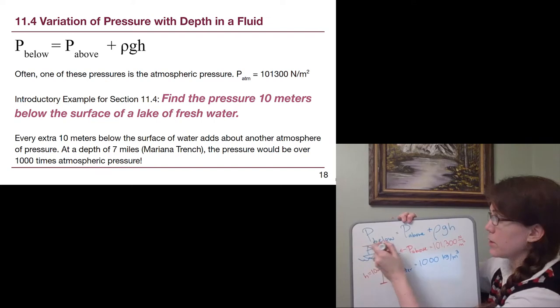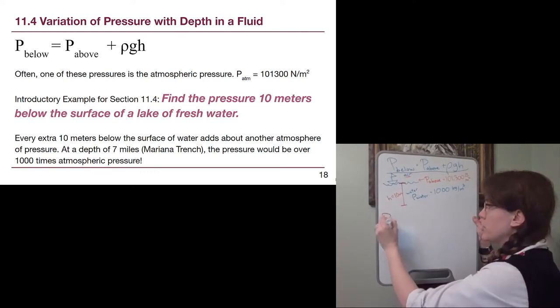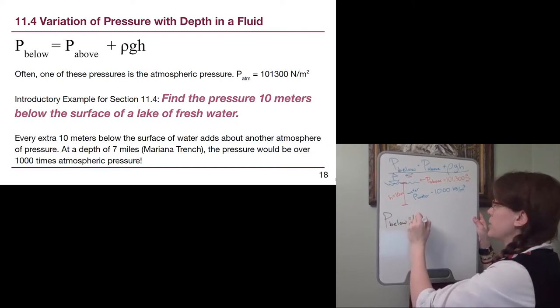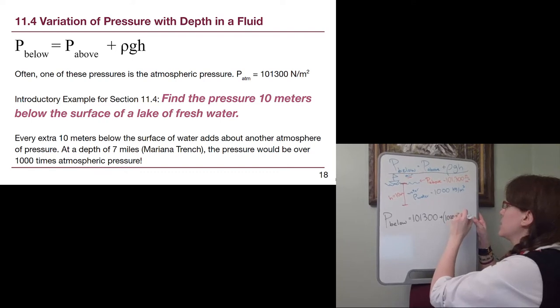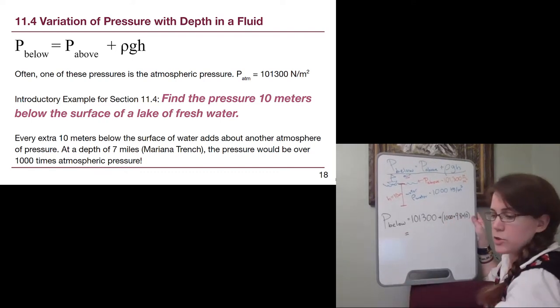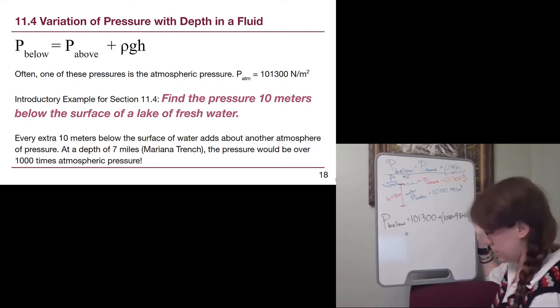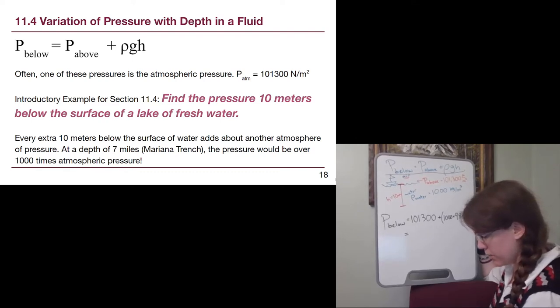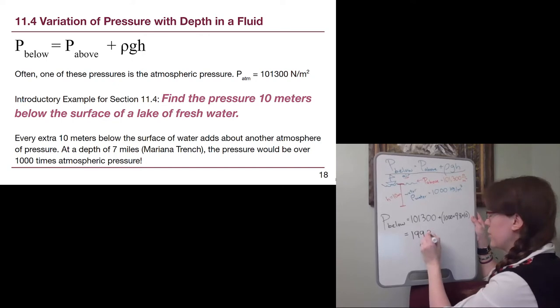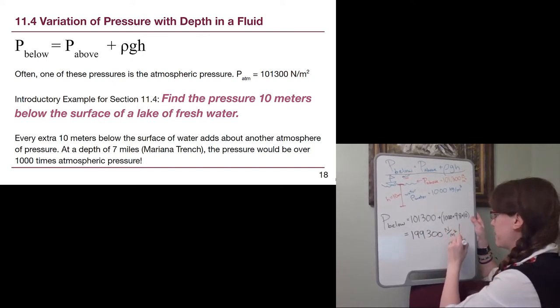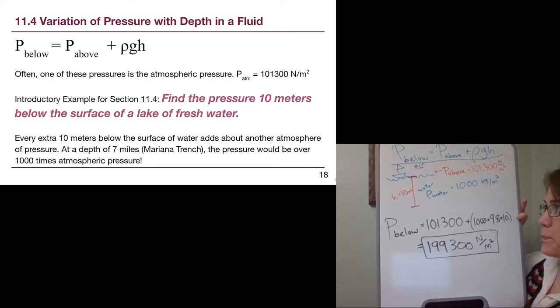The height we already have and G is 9.8. There is only one unknown, which is the pressure we're looking for. So the pressure that we're looking for, that's 10 meters below the surface, is the pressure above, this big atmospheric pressure, plus density, 1000, times G, 9.8, times height, 10. So that pressure is going to be about double. We plug in all of those and we get 199,300 newtons per square meter.